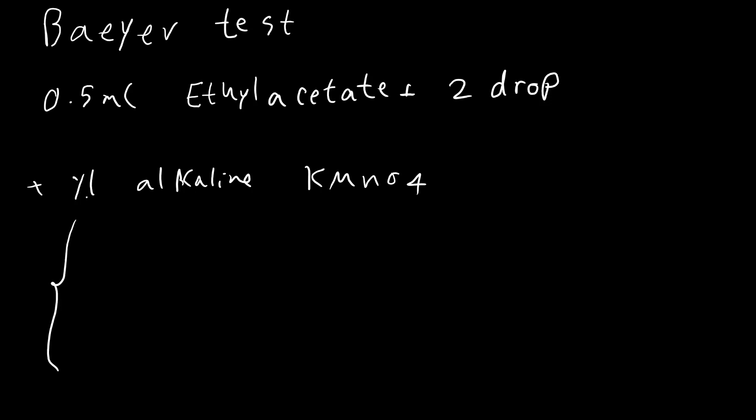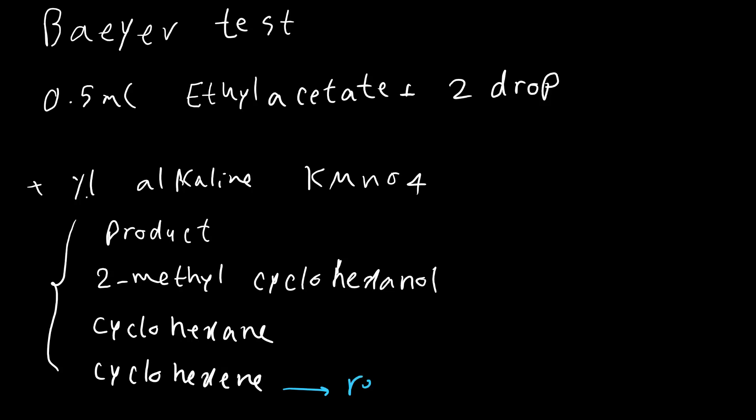In the second test, we are going to use Baeyer test to see if we have any double bond in our structure. We are going to use 0.5 milliliters ethyl acetate, 2 drops of organic compound (it can be our product or other reference), and also we are going to add 1% alkaline potassium permanganate solution dropwise. We are going to perform this test again for our product, for 2-methylcyclohexanol, for cyclohexane, and cyclohexene. And of course, again, our major reference is the last one.